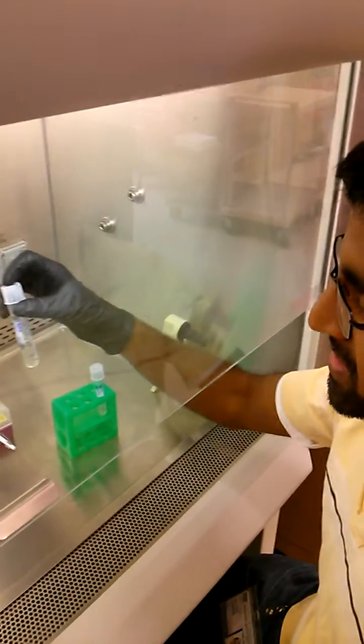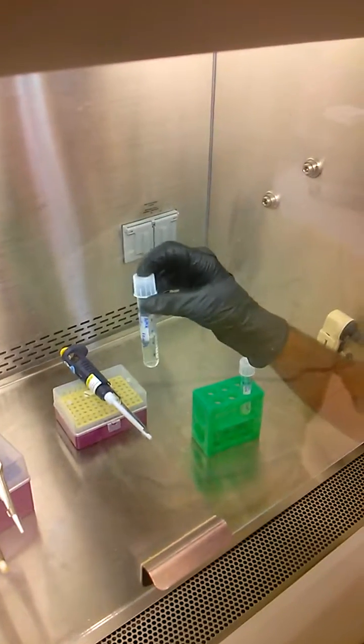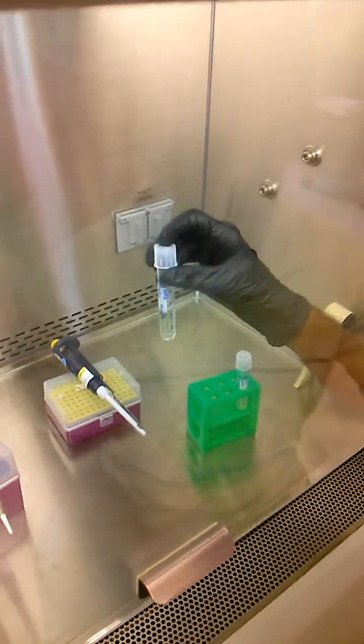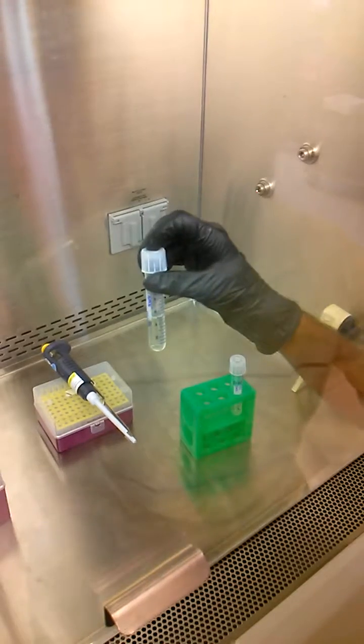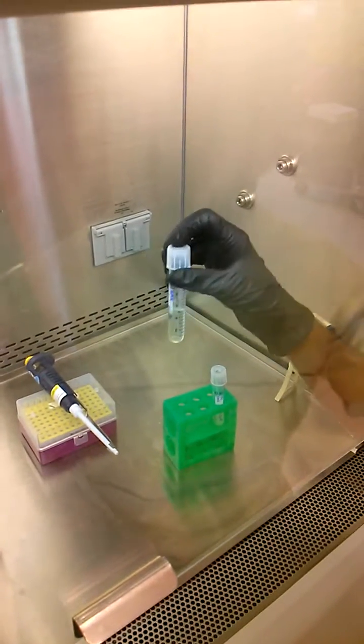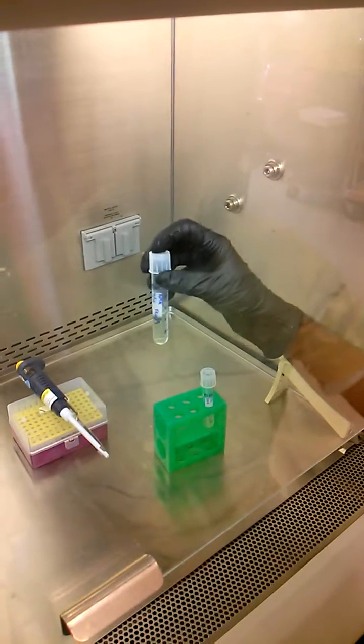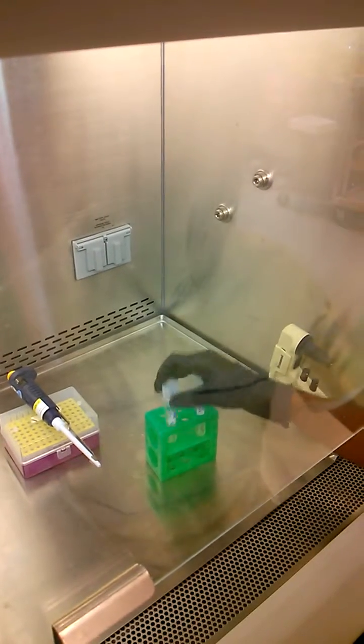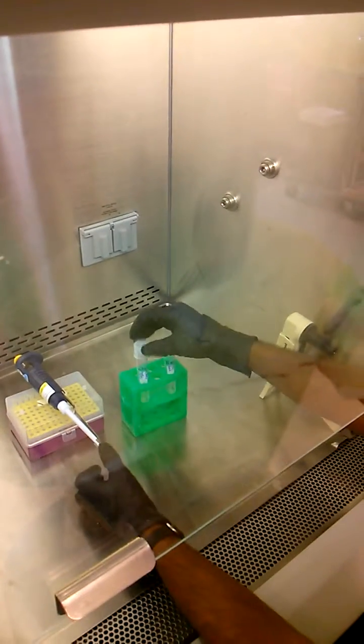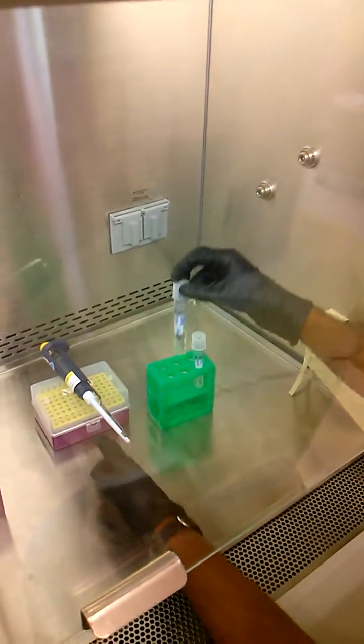So what I've done is I've already prepared five mils of LB broth with a little bit of glucose and some calcium chloride. The calcium is necessary for the infection to occur, and I also have the kan antibiotic in here.